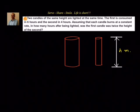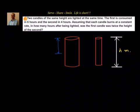Let us say that these two are the candles. We have lit the candles. Now we have to find out after how much time the first candle height will be twice the second candle height. Let us say that after t hours the condition will be satisfied — this much height is burned in the first candle, so the new height will be what remains. In the second case, this much height is gone in t hours.